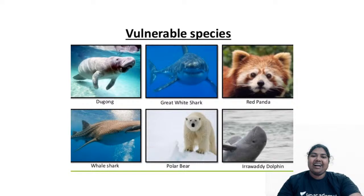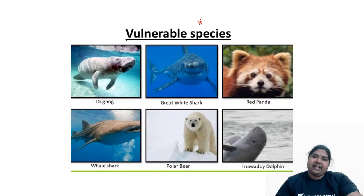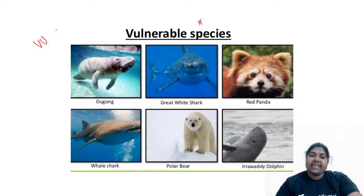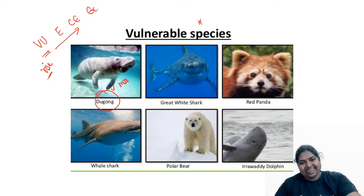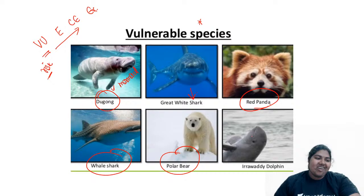Some species also come under the rare and endangered categories — blue whale, Bengal tiger, Ganges river dolphin are under endangered species. Now, vulnerable species: remember the order — after vulnerable comes endangered, then critically endangered, then extinct. Vulnerable species are relatively at risk but not yet moving to a greater threat. Examples include dugong, great Indian white shark, red panda, polar bear, and whale shark.